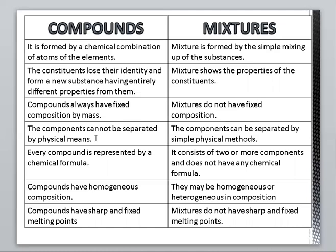The components of a compound cannot be separated by physical means — for example, we cannot physically separate hydrogen and oxygen in a water molecule. However, the components of a mixture can be separated by simple physical methods. For instance, a salt and water solution can be separated by evaporation. Every compound is represented by a chemical formula — for example, water is H₂O, sugar is C₁₂H₂₂O₁₁, and common salt is NaCl. A mixture does not have a chemical formula because its components are irregular and not present in fixed proportions.